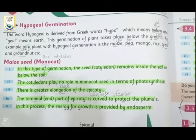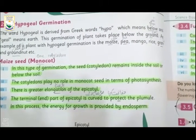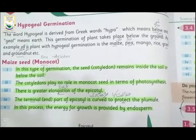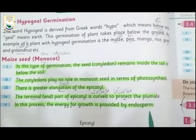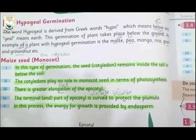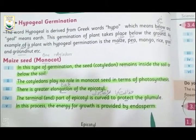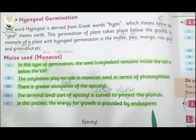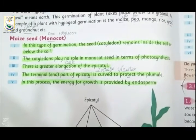Hypogeal germination میں Seed Below the Ground germinate کرتا ہے اور اس کی مثال maize، pea، mango، rice، gram اور groundnut ہے. اب ہم اس کی مثال پڑھیں گے.